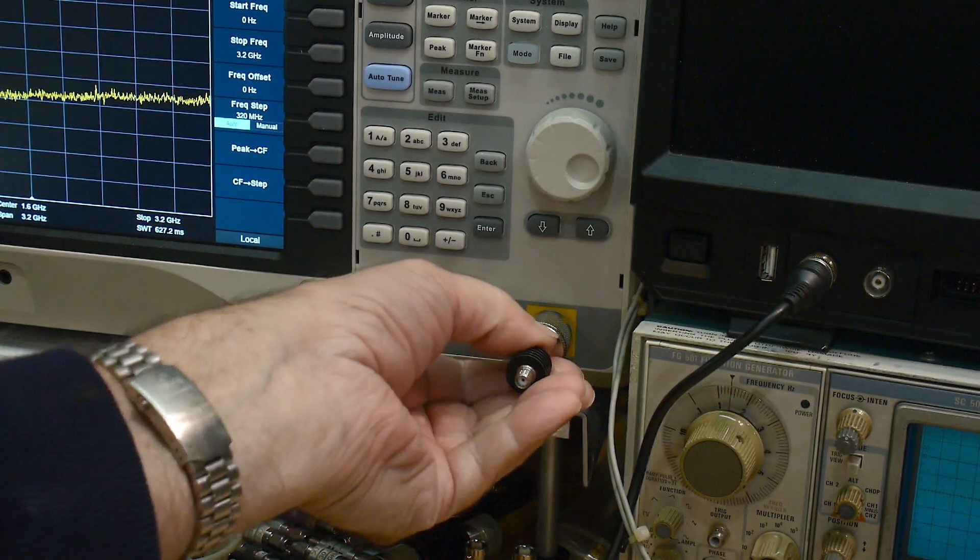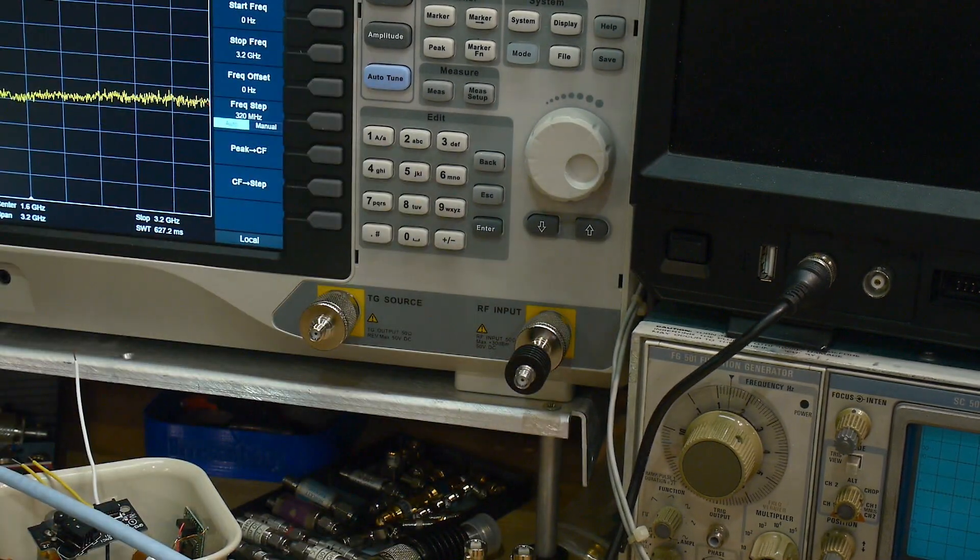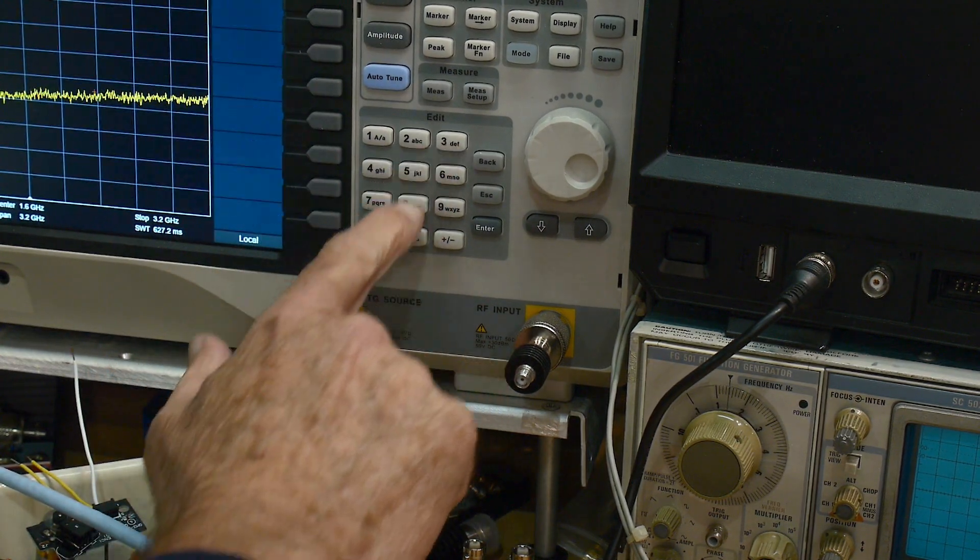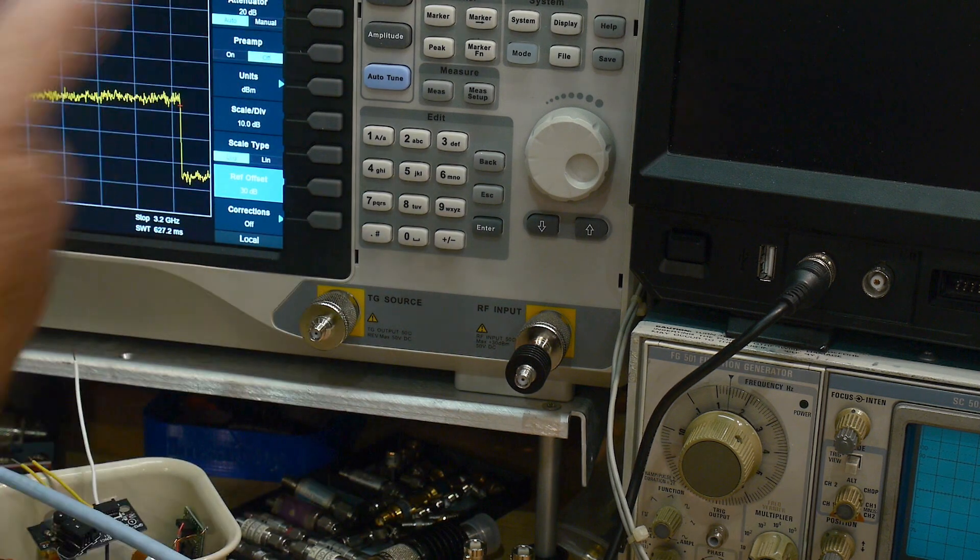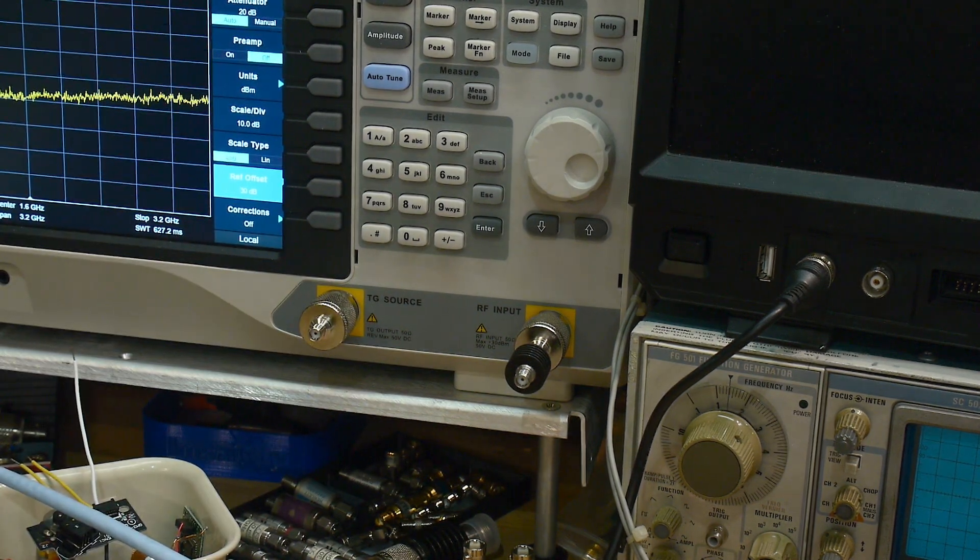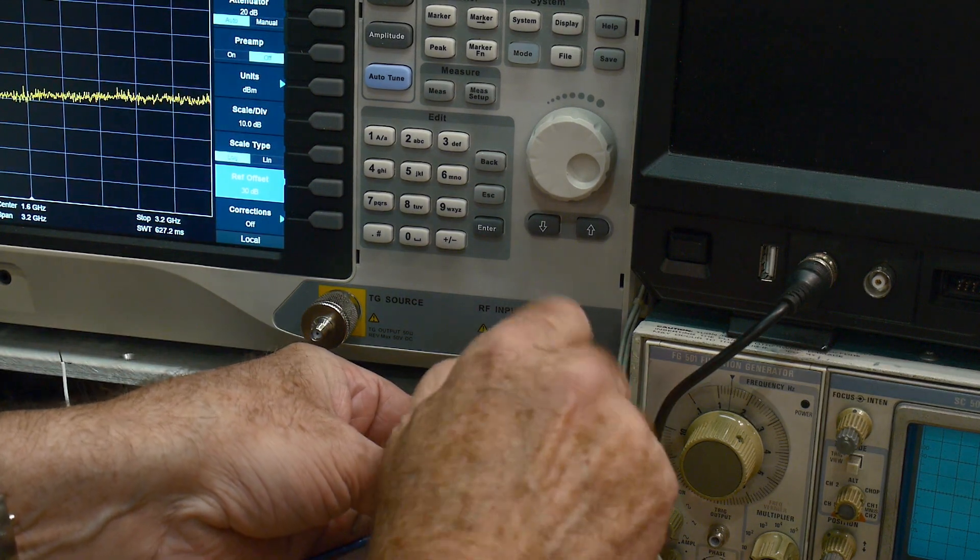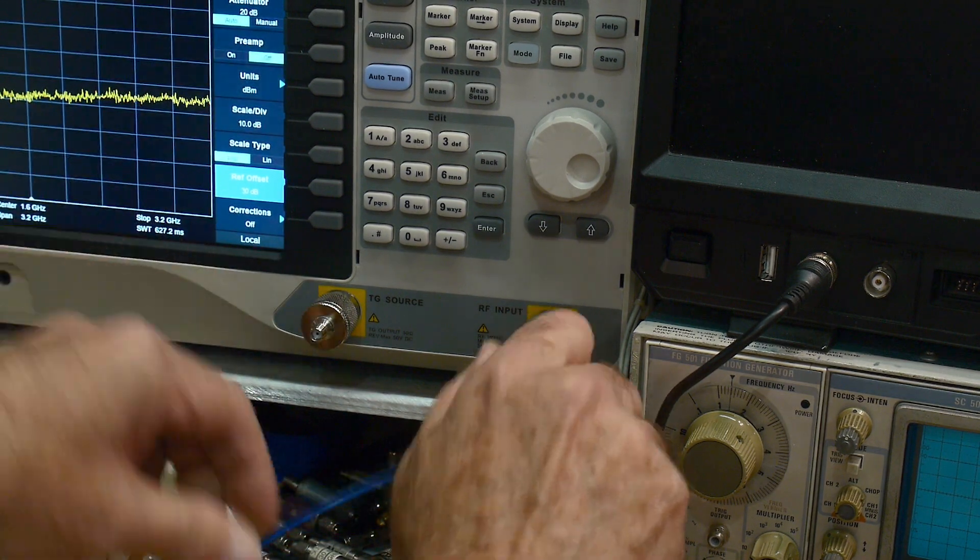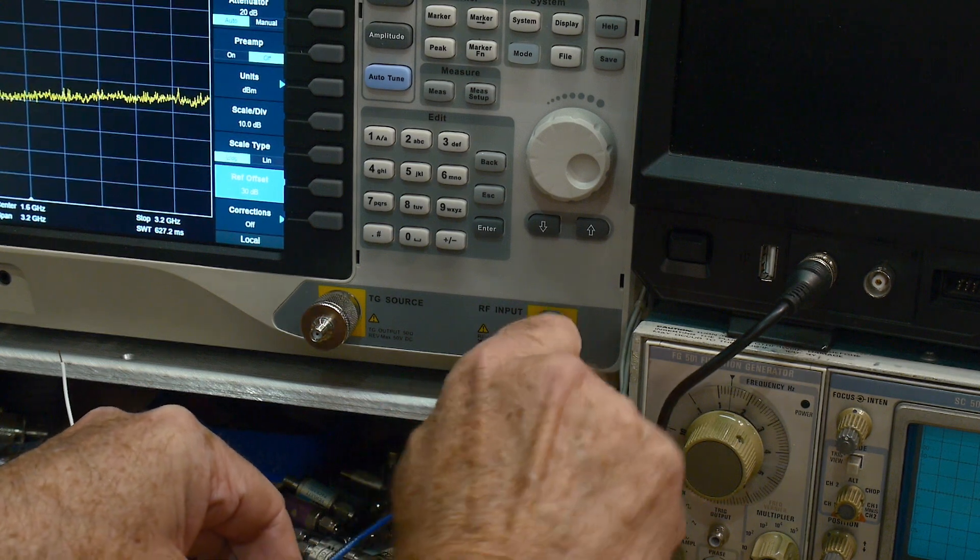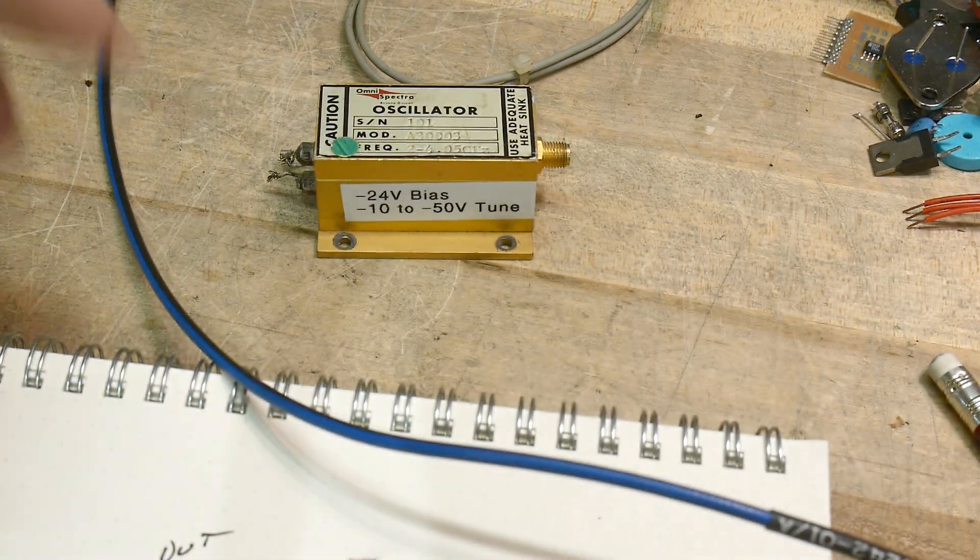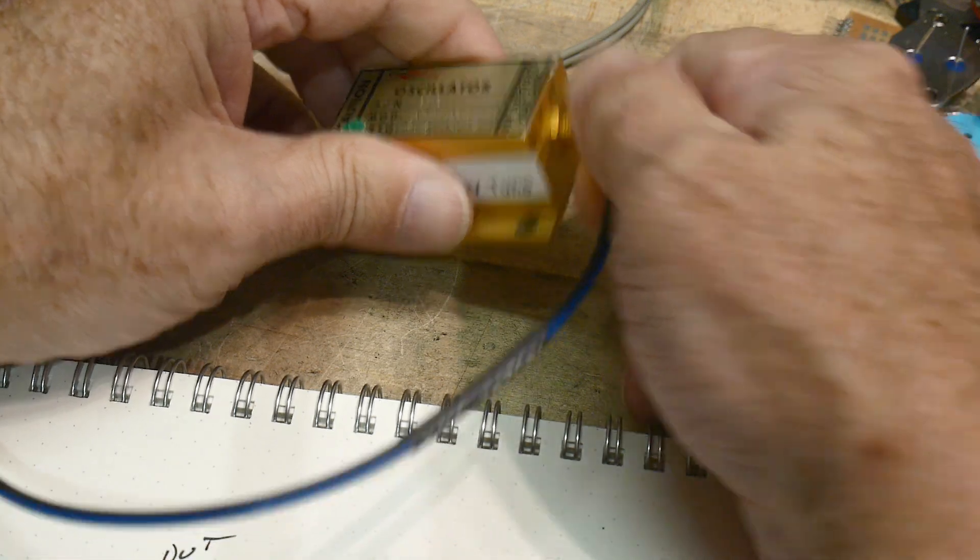So what I'm going to do is I'm going to put a 30 dB attenuator here. So, we have to tell the instrument that we have a 30 dB attenuator in line so it can do the math correctly. And then we will hook up our cable. And now we can go back down over here, hook up our cable to the oscillator.